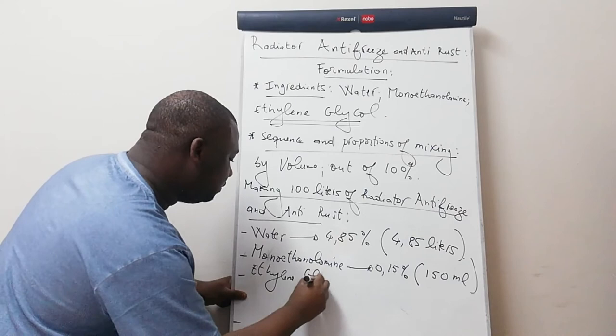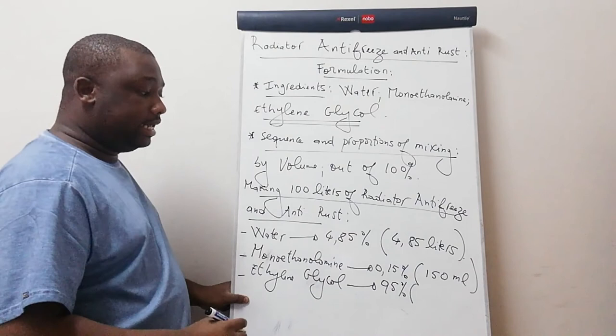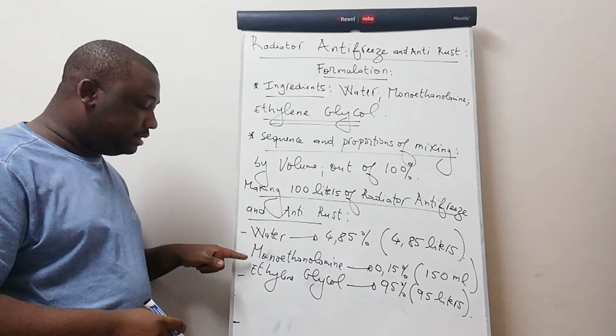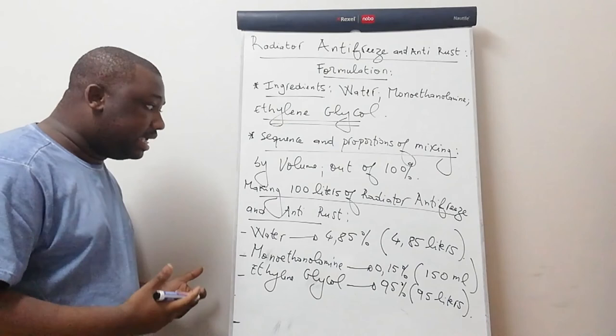Ethylene glycol should be 95% of the total volume. Out of 100 liters, this is about 95 liters. And please, something particular here: you have your water first. You mix monoethanolamine with water before you can add ethylene glycol. This is very important. By actually doing this, you obtain your 100 liters of Rajeta Anti-Freeze and Anti-Rust.